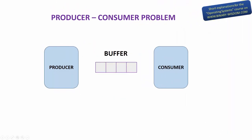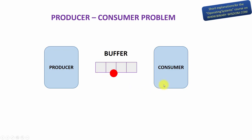In its simplest form, the producer-consumer problem looks like this. The producer produces items one by one and places them in a buffer that can hold a limited predetermined number of items. The consumer takes items from this buffer one by one and consumes them. In a more complex version there could be multiple producers and multiple consumers, but we will stick with the initial simple version.